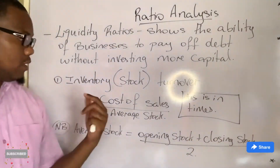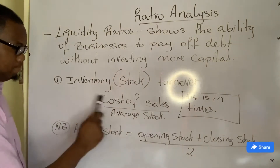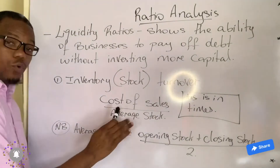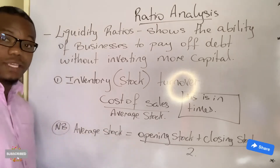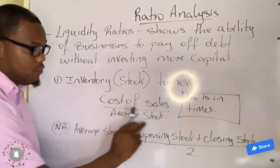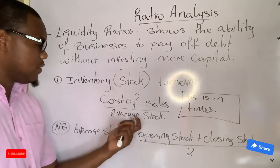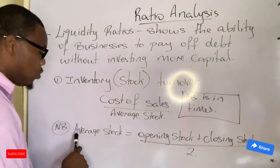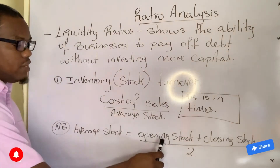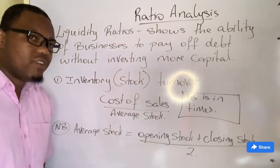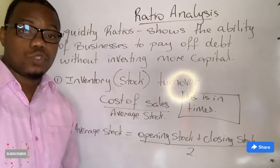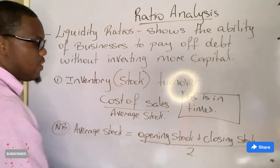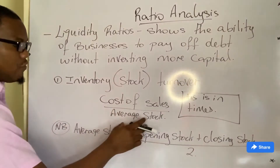The formula for inventory turnover is cost of sales divided by average stock. You need to know that average stock is something you have to calculate — chances are a question may not give you the average stock directly. Average stock is calculated as opening stock plus closing stock divided by two. Anytime you hear the word 'average,' you know you'll be dividing by something.